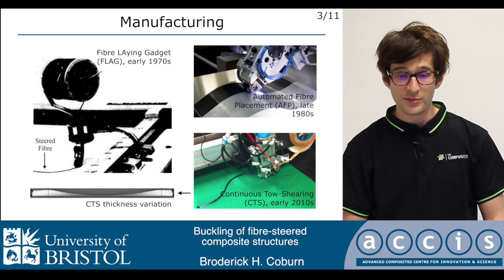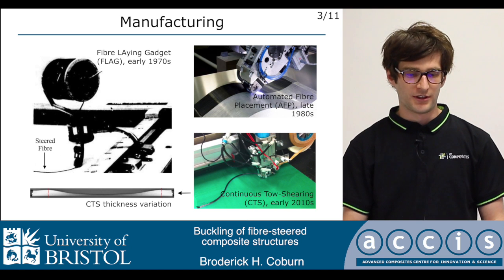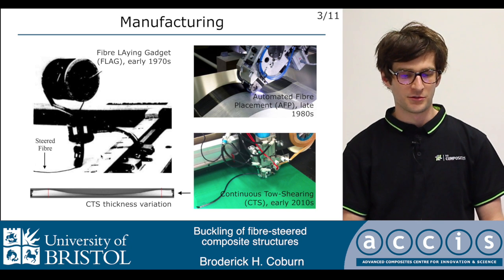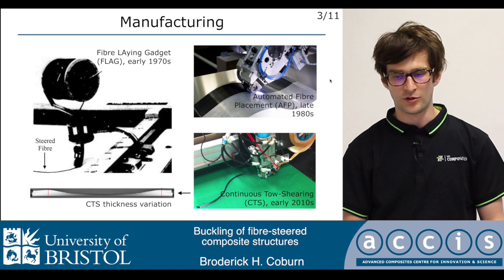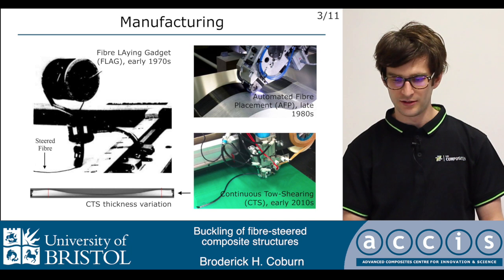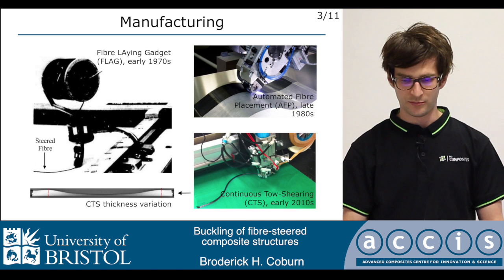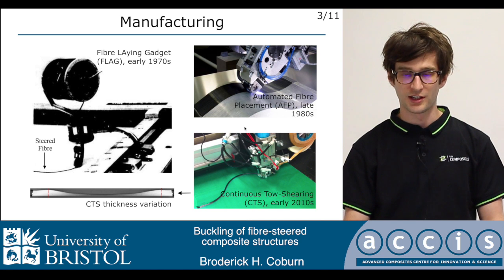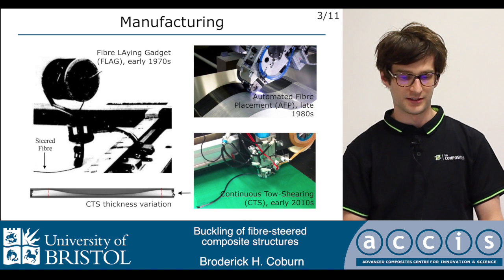Fibre steering has been done since the early 1970s. It was originally done with a fibre laying gadget where the idea was to steer around a discontinuity to try and reduce stress concentrations. Since the development of AFP in the late 1980s, manufacturing of more complex structures in a more repeatable manner has become a possibility. More recently, a new technique — continuous tow shearing — has been developed here at the University of Bristol, and with this technique there is a coupled thickness increase which can actually be used to benefit certain applications.